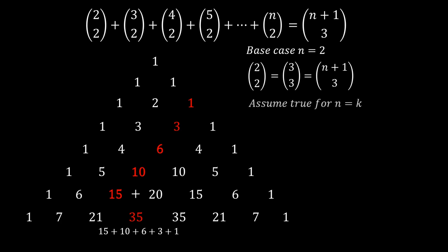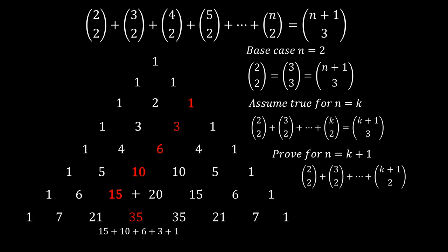Assume that it is true for n equals k and let's prove it for n equals k plus 1. Here we can substitute k plus 1 choose 3 into the sum and apply Pascal's identity again to get k plus 2 choose 3. So the identity is true.